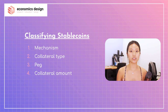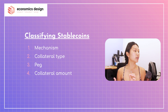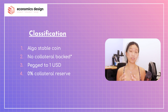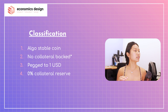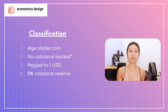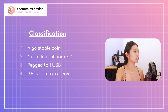When we talk about stablecoins, we classify them into four different categories: the mechanism, the collateral type, what it is pegged to, and the collateral amount. UST is an algo stablecoin, so the mechanism is algorithmic. It has two tokens — Terra and UST — and it is not reserve-based, so it's completely 100% algorithmic. It doesn't have any collateral. It is pegged to one US dollar and doesn't have any collateral reserve.